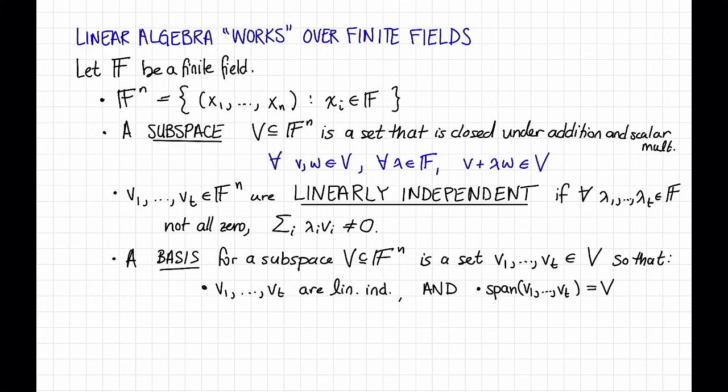I realize that I've forgotten to define span, so let's do that now. For vectors v1 dot dot dot up to vt in F to the n, the span of v1 to vt is equal to the set of all linear combinations of those vectors, with coefficients that come from the field F.